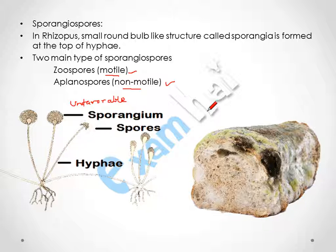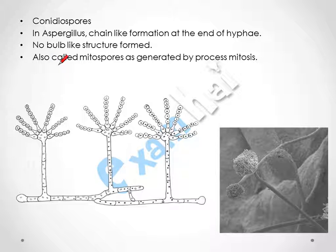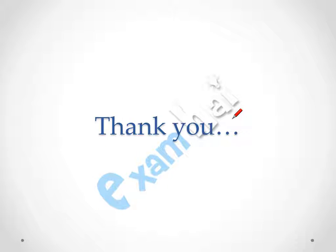You can see the growth of Rhizopus on bread in this diagram. Conidiophores in Aspergillus show a chain-like formation at the end of hyphae — you can see the chain-like structure. There is no bulb-like structure as in sporangiophore. Conidiospores are also called mitospores as they are generated by the process of mitosis. Each of these spores will develop into a new full fungus. Thank you for watching this video.